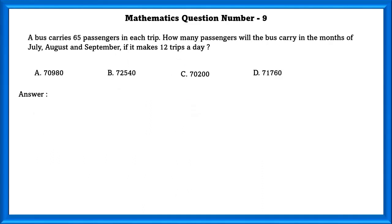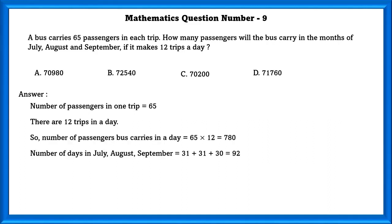Mathematics question number 9. A bus carries 65 passengers in each trip. How many passengers will the bus carry in the months of July, August and September if it makes 12 trips a day? Number of passengers in one trip is equal to 65 passengers. There are 12 trips in a day. So the number of passengers bus carries in a day is equal to 65 into 12, which is equal to 780 passengers per day. And number of days in July, August and September is equal to 92 days in all.